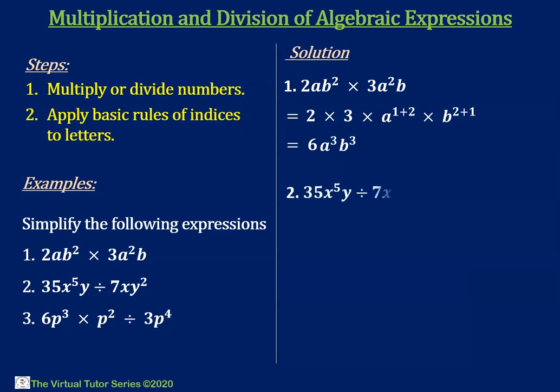Example 2: we are given 35x to the power 5 times y divided by 7xy squared. The first step is to divide the numbers: 35 divided by 7. The next step is to subtract the exponents of the letters since we have a division sign: x to the exponent 5 minus 1, times y to the exponent 1 minus 2. So 35 divided by 7 is 5, x to the exponent 5 minus 1 is x to the power 4, and y to the exponent 1 minus 2 is y to the power negative 1.